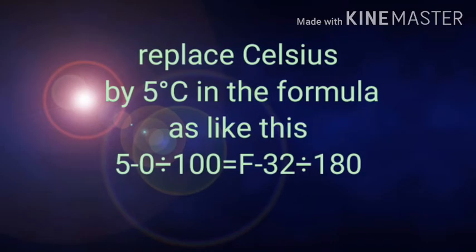Now let us calculate the Fahrenheit value. Replace Celsius by 5 degree in the formula as like this: 5 minus 0 divided by 100 which is equal to F minus 32 divided by 180.